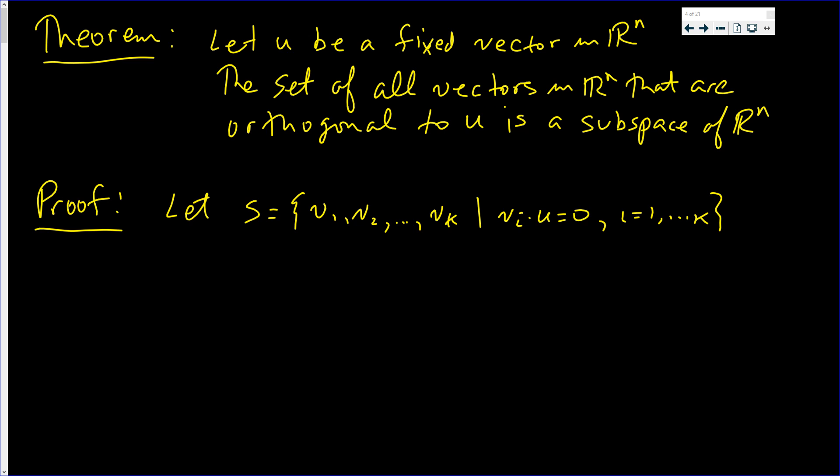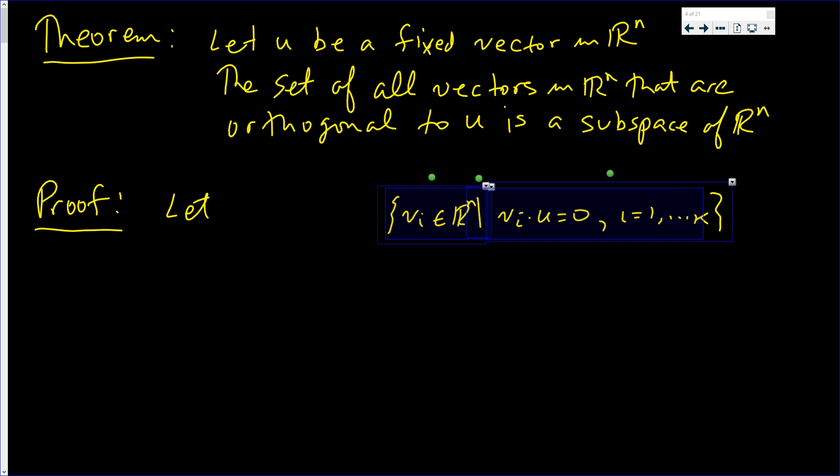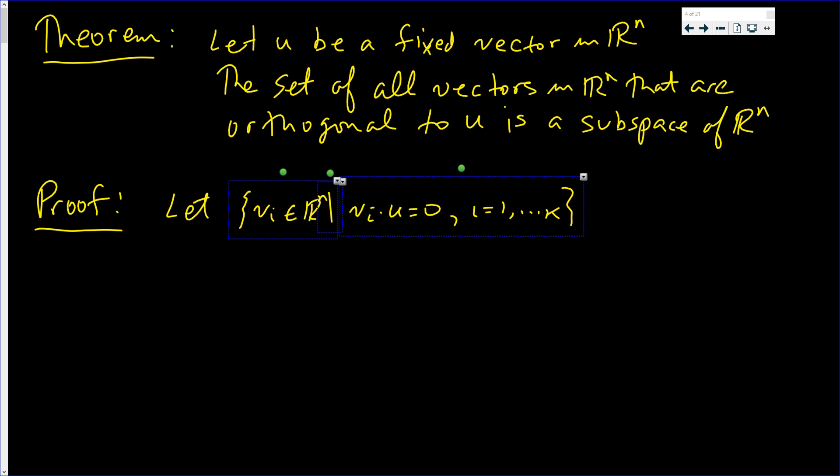The set of all those vectors—well actually it's just the set of Vi's in R^n such that when you dot it with U you get 0. Now I want to show that this set—let's give it a name, let S equal that—I want to show that S is a subspace of R^n.